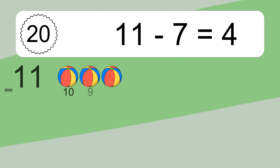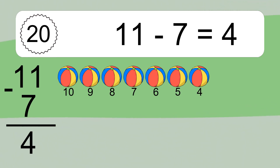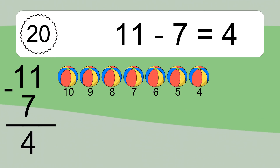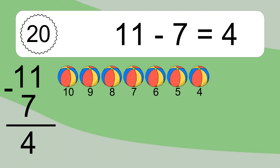11 minus 7 equals 4. Let's count it: 10, 9, 8, 7, 6, 5, 4. 11 minus 7 equals 4.